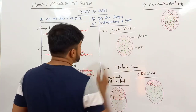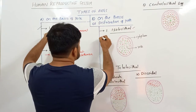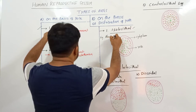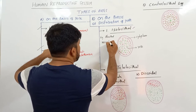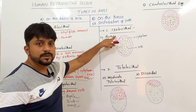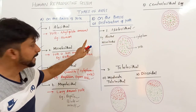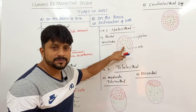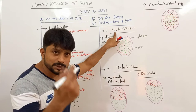Such Isolecithal eggs can be found in Alicethal as well as Microlicethal eggs, where the amount of yolk is very less or negligible. Their distribution in the cytoplasm is evenly distributed. It's called Isolecithal.